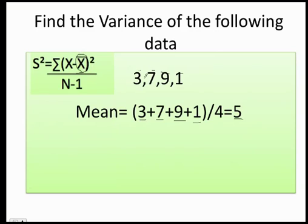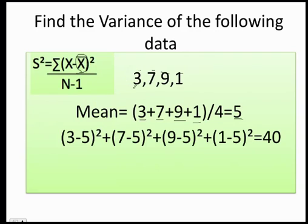Now we're going to subtract every single value minus the mean and we're going to square it. Let's do it. 3 minus 5 squared equals negative 2. Negative 2 times negative 2 is 4. Plus 7 minus 5 is 2. 2 times 2 again is 4. 9 minus 5 equals 4. 4 times 4 equals 16. Almost done.